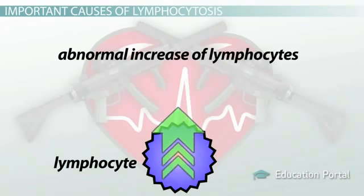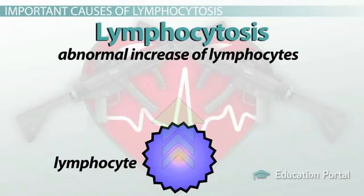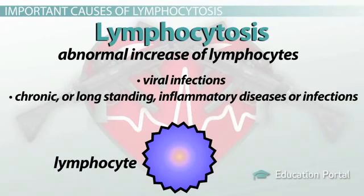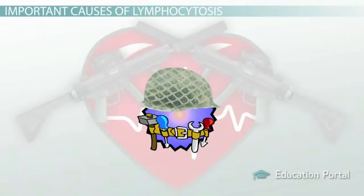Another white blood cell that is part of the leukocyte count is known as a lymphocyte. An abnormal increase of lymphocytes, or lymphocytosis, is generally attributed to viral infections, chronic or long-standing inflammatory diseases or infections, and cancer such as chronic lymphocytic leukemia and acute lymphoblastic leukemia. Lymphocytes are like the army engineers in your private army — they provide your body with highly specialized responses and products for specific problems.